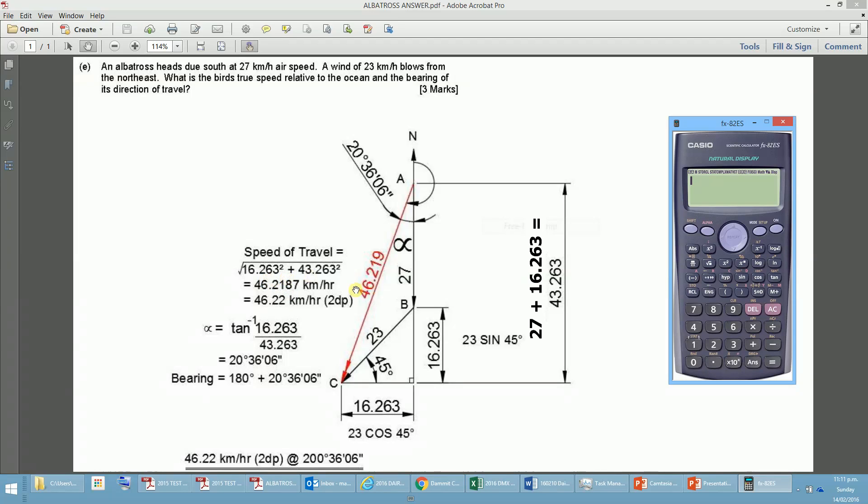But just before we do that, I should actually work out these here, so that's going to be, just using the calculator. 23 times sine 45 equals, and then we should push that there, 16.263. So that's working out there, and again, 45 cosine,